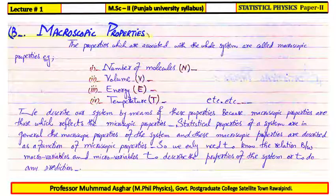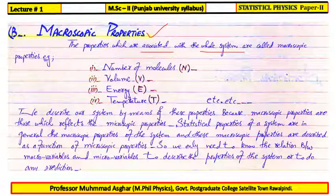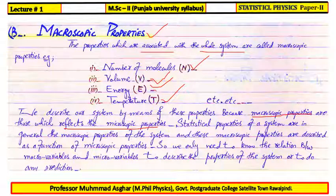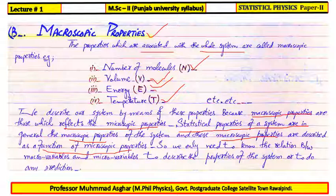Macroscopic properties are the properties which are associated with the whole system. For example: total number of molecules in a gas, total volume of gas, total energy in a gas, temperature, etc. Macroscopic properties reflect the microscopic properties. The statistical properties of a system are in general the macroscopic properties, and macroscopic properties are described as a function of microscopic properties. So we only need to know the relation between macroscopic and microscopic variables to describe the system.